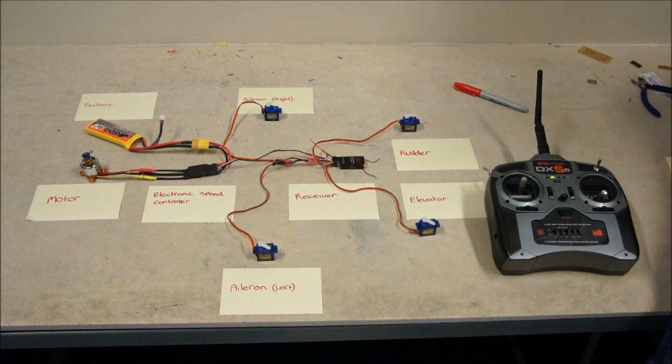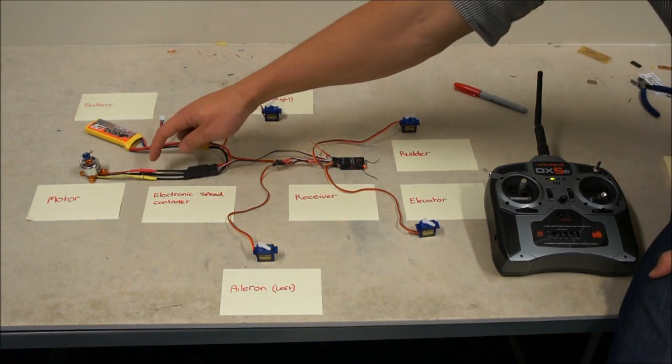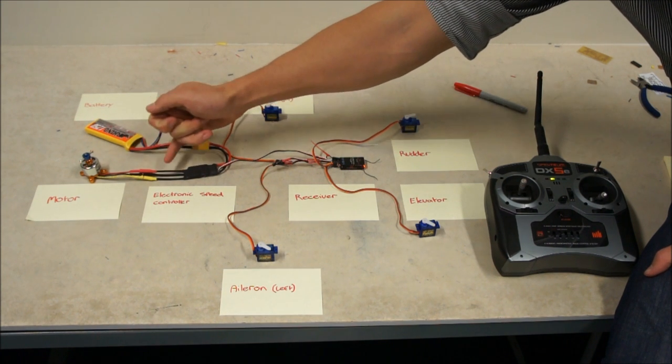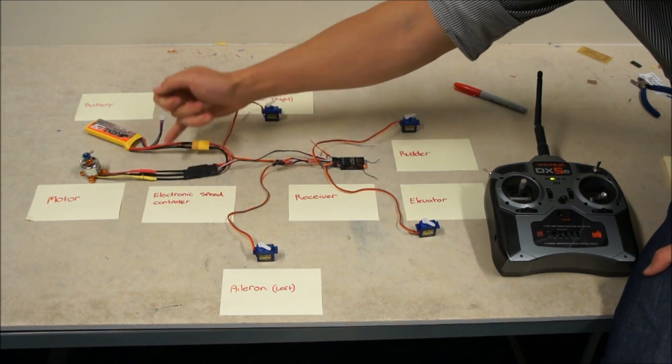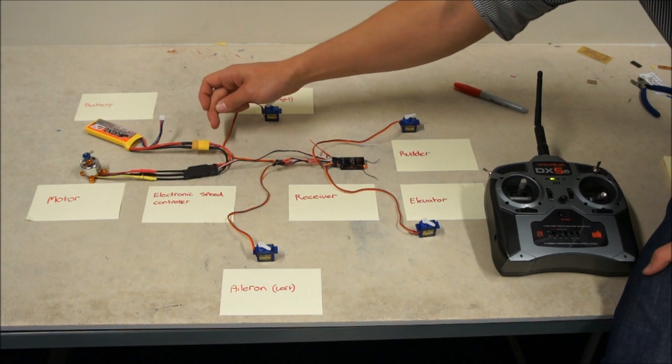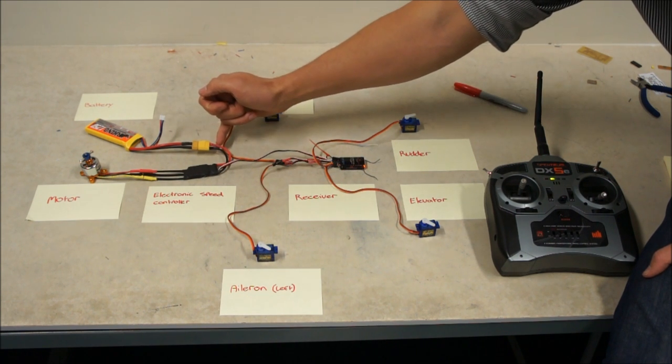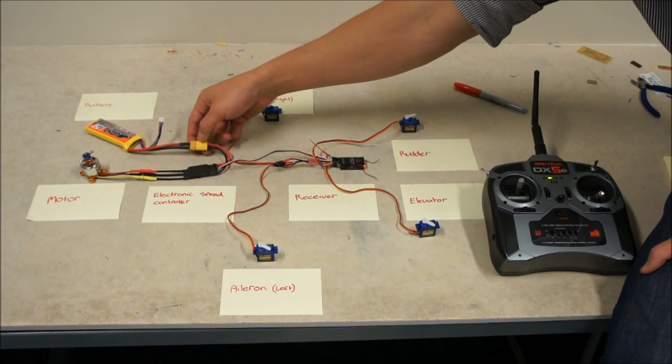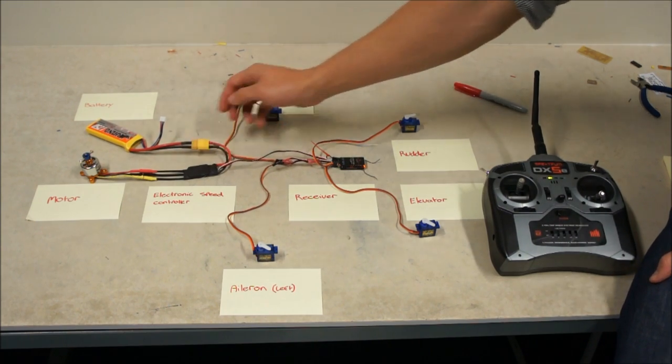So there it is, that's our control system. Now I'm going to show you how to solder these bullet terminals on to both the motor and the speed controller and also we need to solder on these two wires to an XT60 connection terminal.